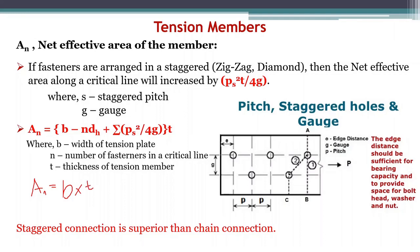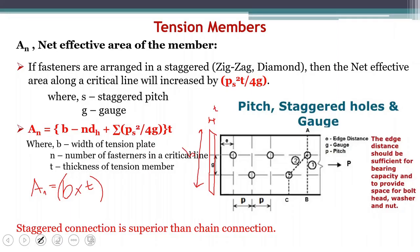The cross-section area resists the tensile force. Looking at the cross section, this is the thickness of the tension member and this is the width, so width into thickness is the area which resists the tensile force. Since we are making a hole to connect two members, there is a reduction in area. So the net area at this cross section needs to be calculated.